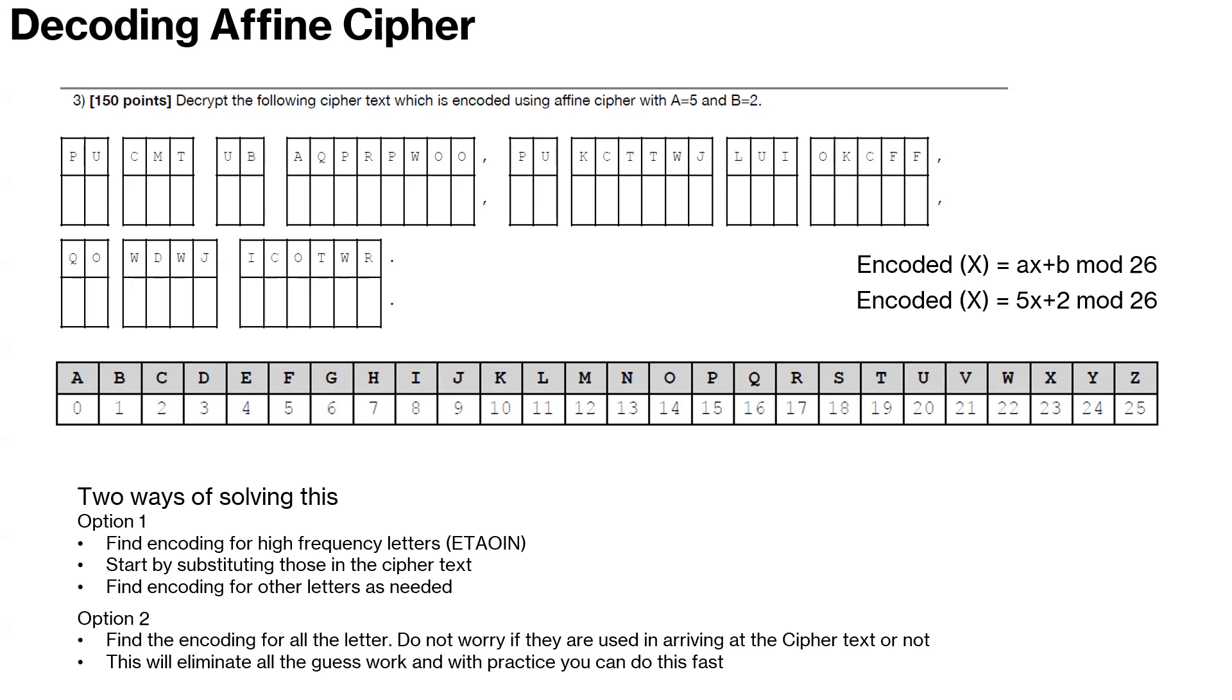So today we are just going to find the encoding for all the letters or most of the letters, probably up till W and X, and then we will go back, try to put together the plain text from the cipher text and see how that goes. So to start with this, we start with 5x plus 2. So we start with A.